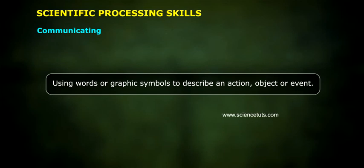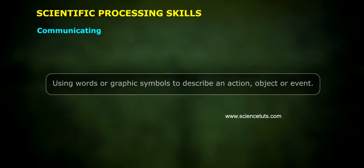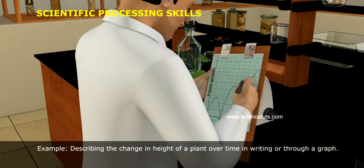Communicating: Using words or graphic symbols to describe an action, object, or event. Example: Describing the change in height of a plant over time in writing or through a graph.